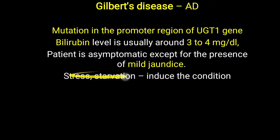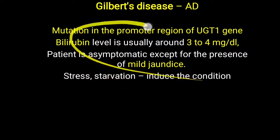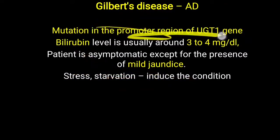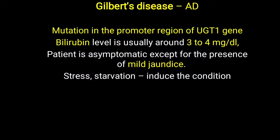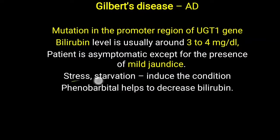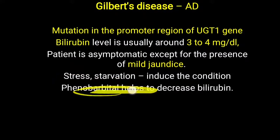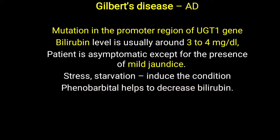In Gilbert disease, stress and starvation can induce defective gene activity and lead to elevation of bilirubin and jaundice. Therefore, patients should try to avoid starvation and stress. Phenobarbital also helps decrease bilirubin level in Gilbert disease.